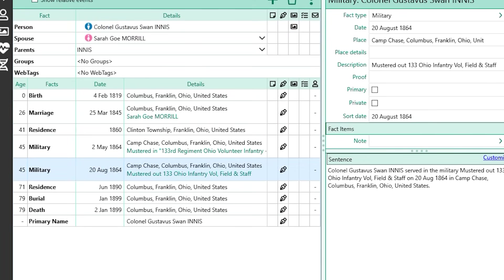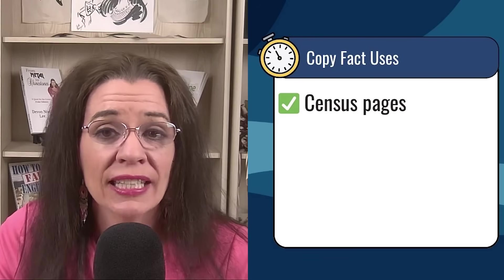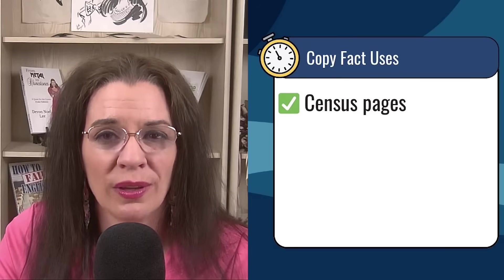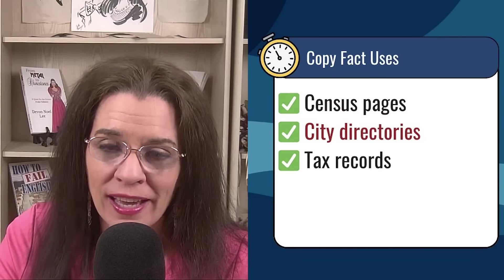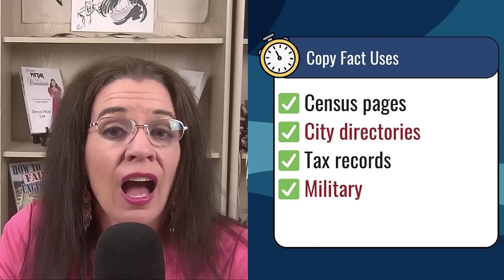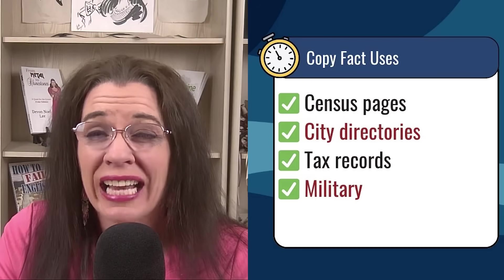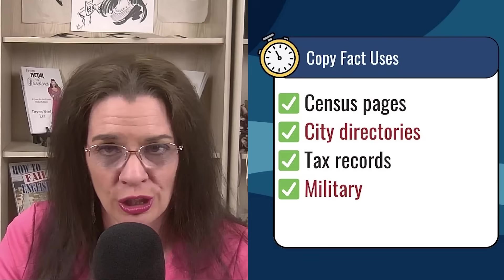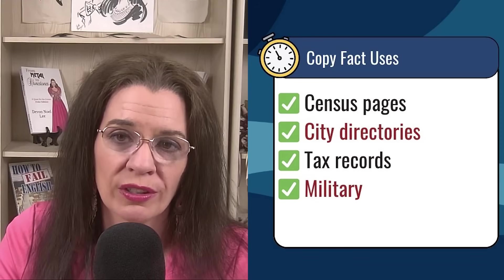Let's talk about some real-life scenarios where Copy Fact shines. It's not just for census records, though it's excellent for that — adding a residence fact to every family member in the same household is a quick win. If multiple relatives appear in a specific year and place in city directories or tax records, enter the event once, copy it to everyone, then customize their specific entries. Military enlistments are a perfect use case. I had 900 men in the same Civil War unit, and nearly 850 were discharged on the same date — copying the same date, location, and source repeatedly made me wish this feature had existed much sooner.